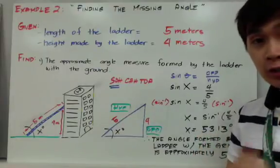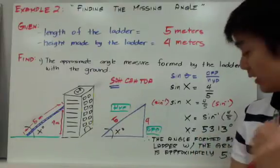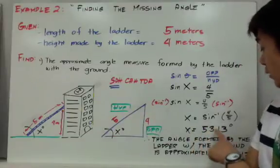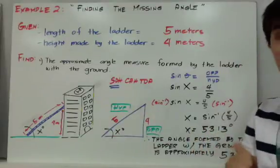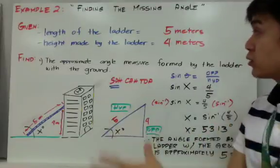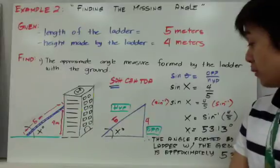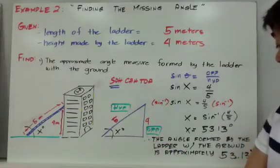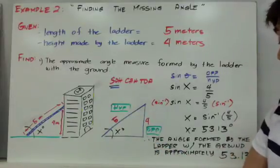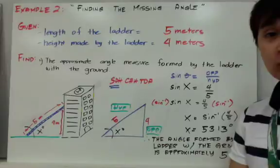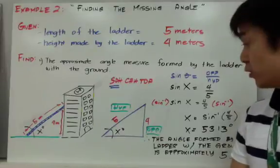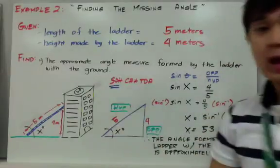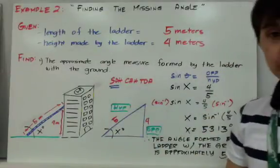So x is equal to 53.13 degrees. We are now able to answer the word problem: the angle formed by the ladder with the ground is approximately 53.13 degrees, based on our SOH CAH TOA.